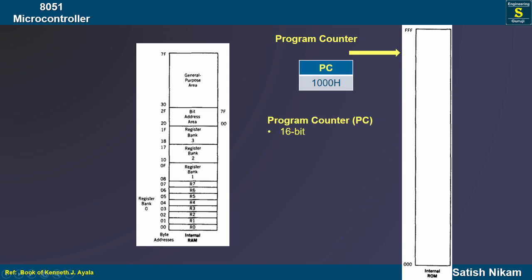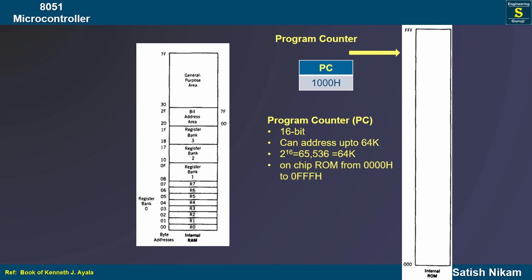The PC is a 16-bit register which allows the 8051 to address up to 64 kilobytes of program memory. How is this calculated? It is 2 raised to 16, which equals 65,536 — normally we say 64,000 and call it 64K. The on-chip ROM is 4K, which spans from 000H to FFFH, where H indicates a hexadecimal number.